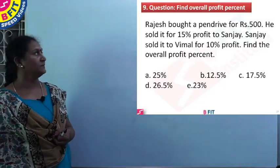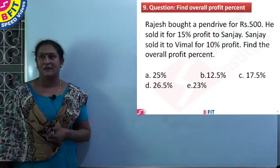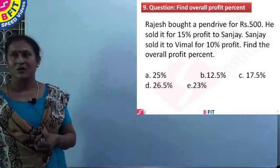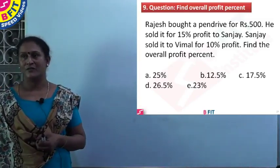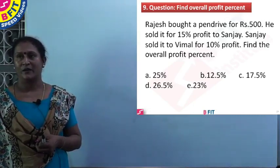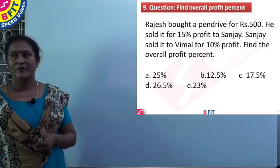So we will see the next question. Question number 9. Rajesh bought a pen drive for Rs. 500. He sold it for 15% profit to Sanjay and Sanjay sold it to Vimal for 10% profit. Find the overall profit percent.